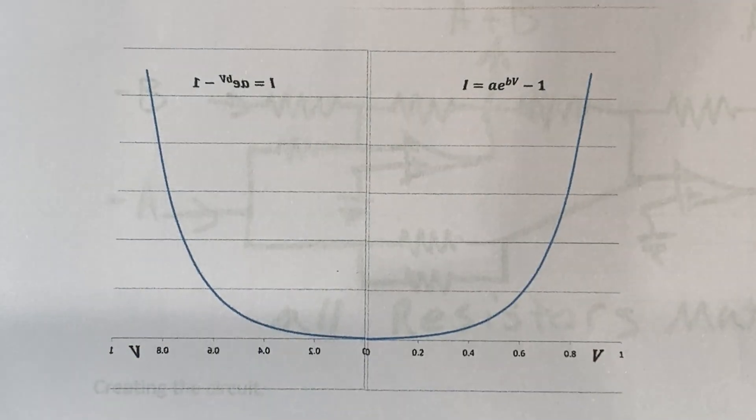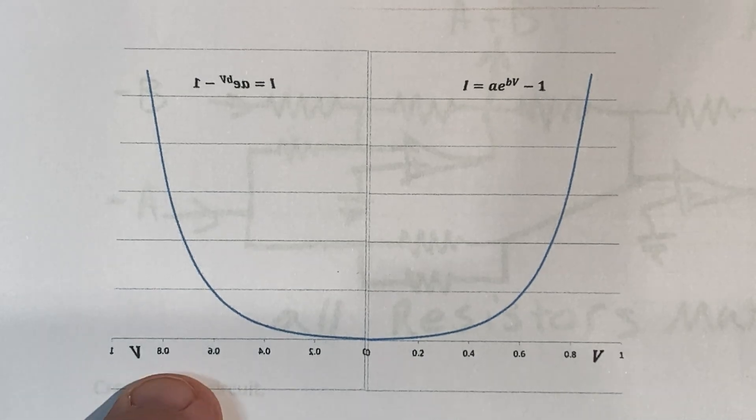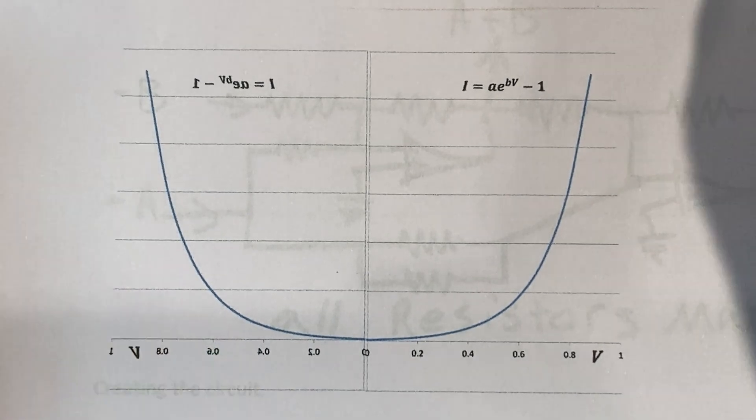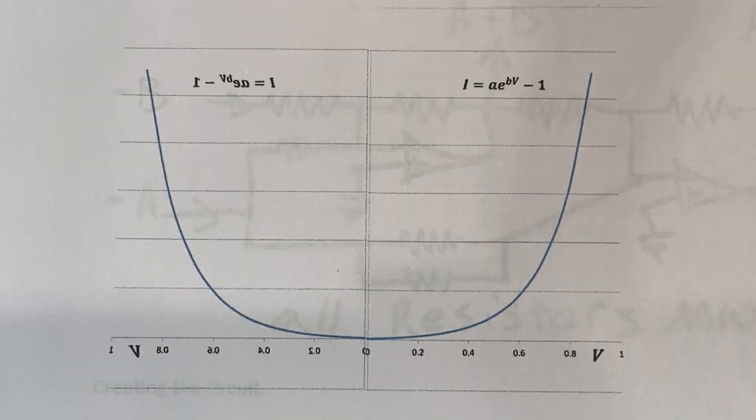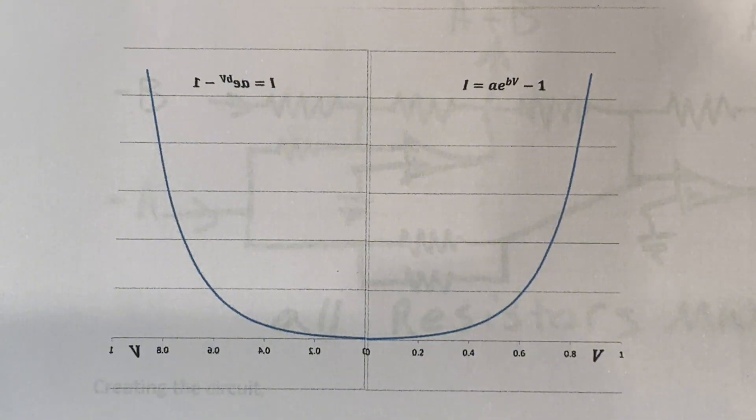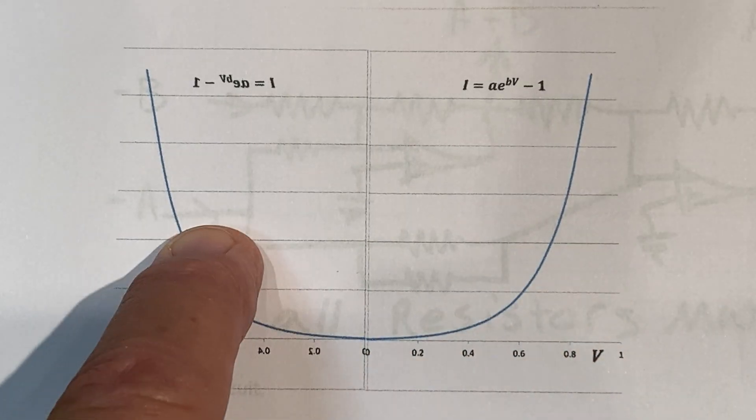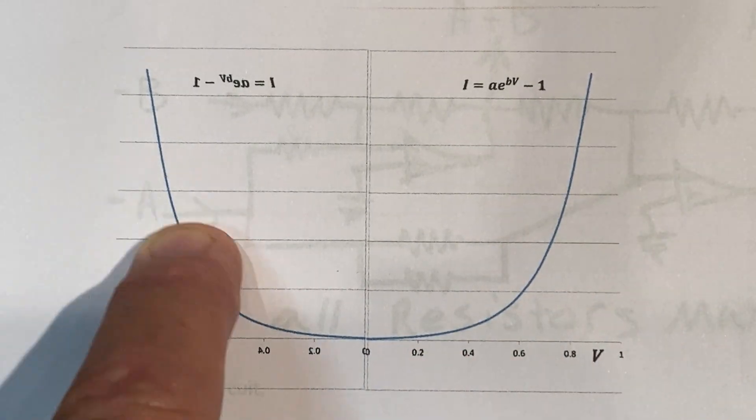And his argument is that yes, it's a hyperbola, but for small signals, quote, the hyperbolic characteristic is indistinguishable from a parabola or square law relationship. In other words, at a small signal level, this is close enough to a parabolic function.